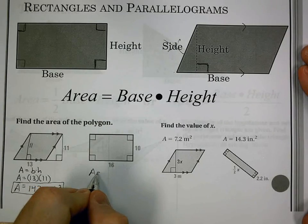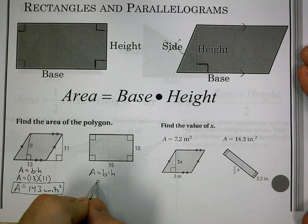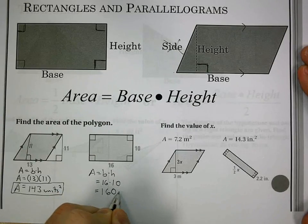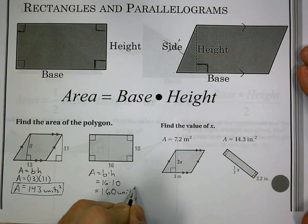Next problem is a rectangle. So this is going to be area equals base times height. I have 16 times 10, which gives me 160 units squared.